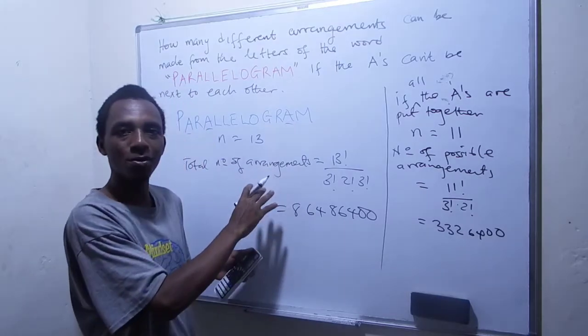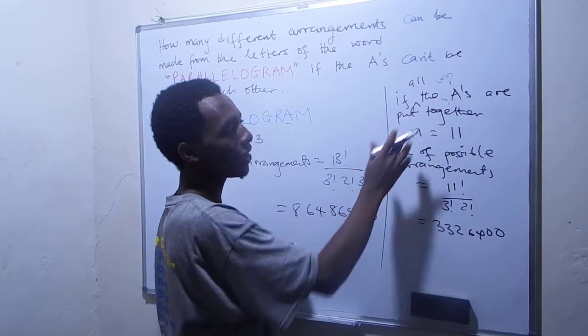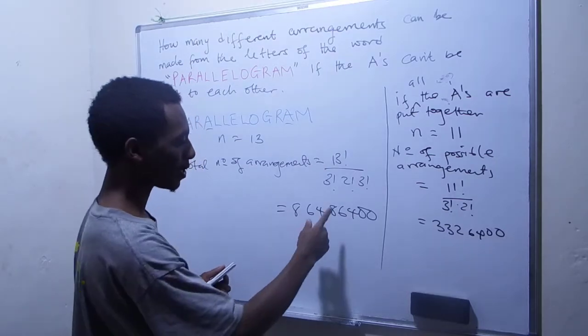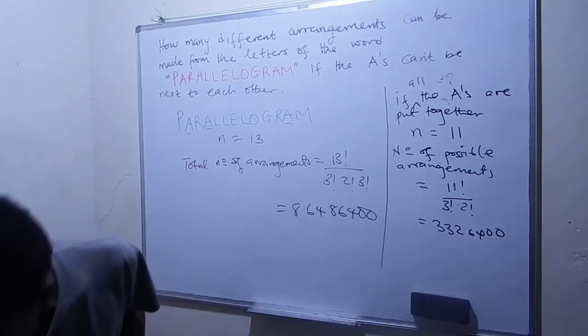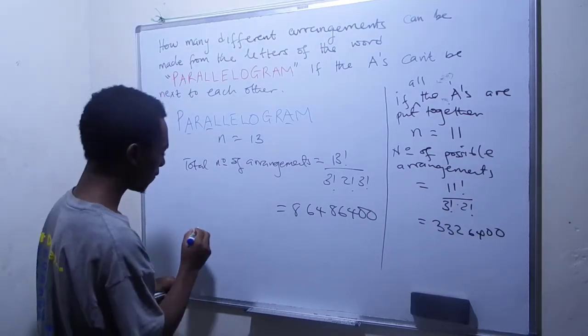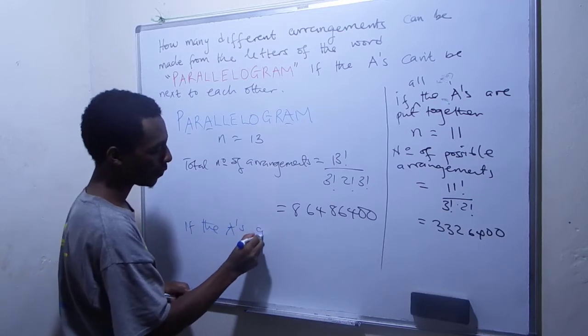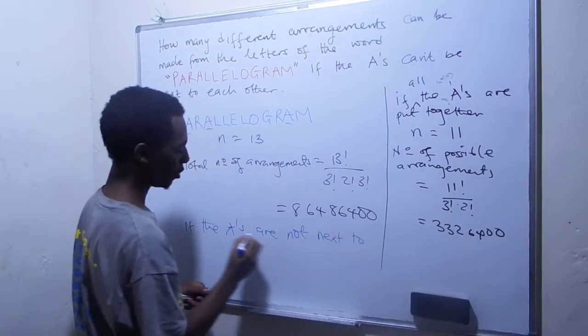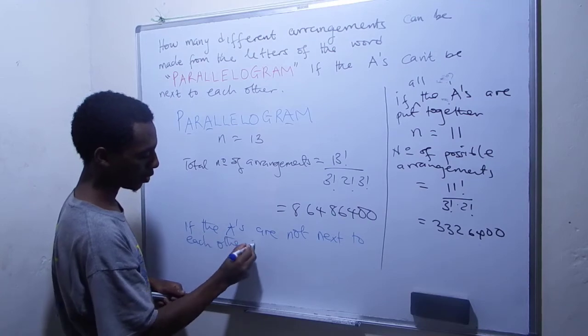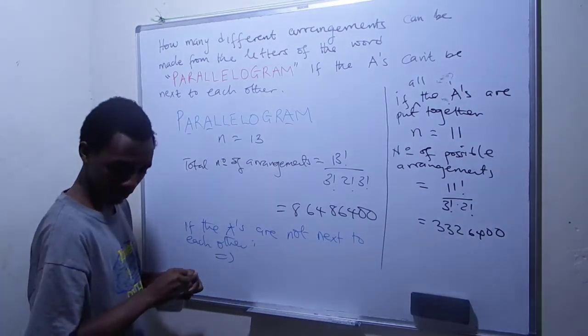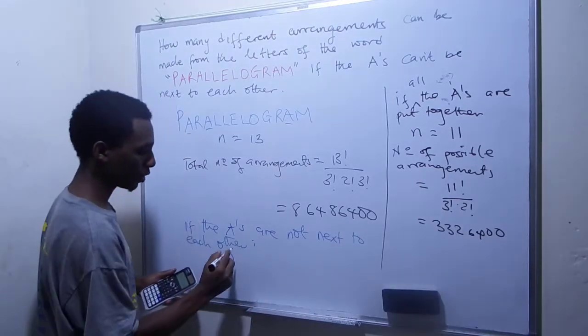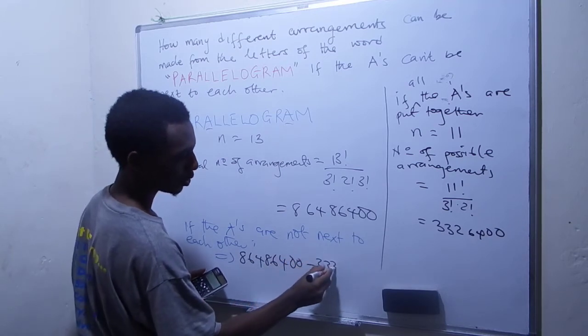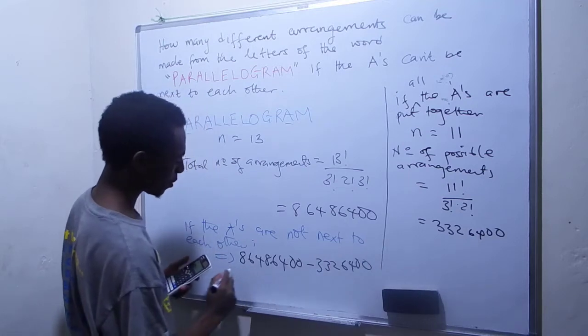Now that we have the total number of possible arrangements and the arrangements if the A's are put together, we can now find how many arrangements if the A's can't be put together. I'll just do that by subtracting this number from this. So just use another color here. So if the A's are not next to each other, so we'll just have this. So we'll just have 8, 6, 4, 8, 6, 4, 0, 0, 0, minus 3, 3, 2, 6, 4, 0, 0, and let's see what that is.